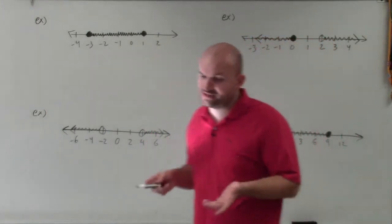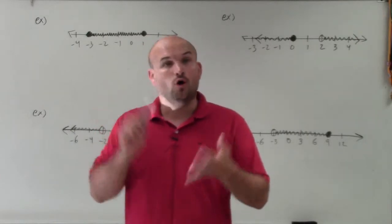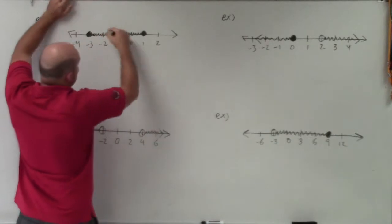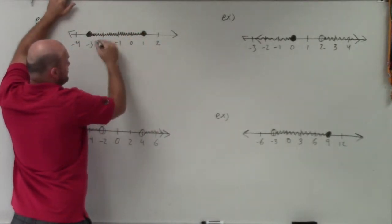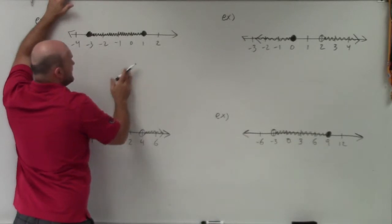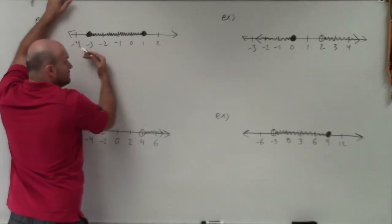Now remember, compound inequalities are going to deal with the conjunction either and or or. And obviously, when we have inequalities here, you can see that my values that are true is going to be my closed points as well as all the shading here. So those points have to be greater than negative 3 and less than 1.